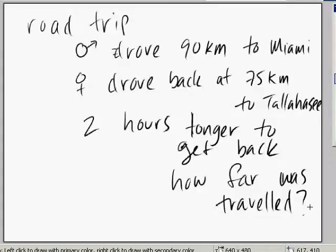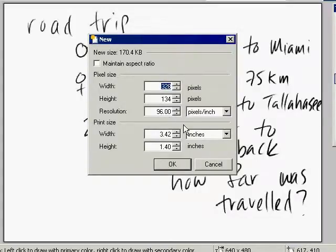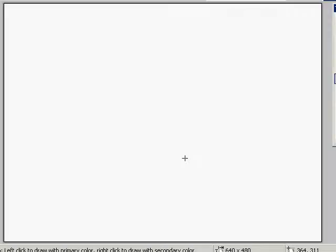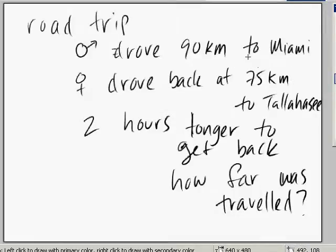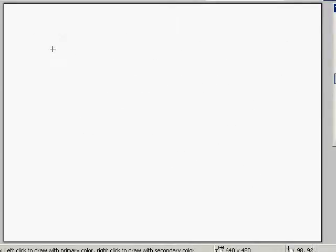So, let's create a new document. Okay, so let's look at our problem. 90 to Miami. So there's mom and there's brother. All right, so we have rate, we have time, we have distance.